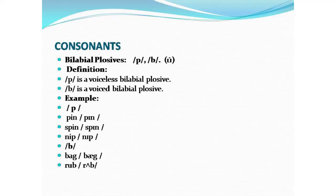P is a voiceless bilabial plosive. B is a voiced bilabial plosive. Examples for P: pin, pen, nip, spin. Examples for B: bag, back, rub.